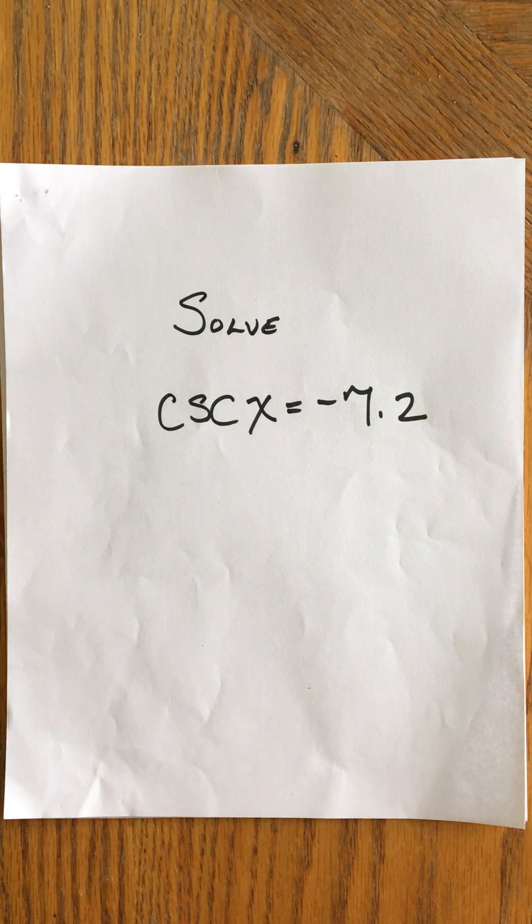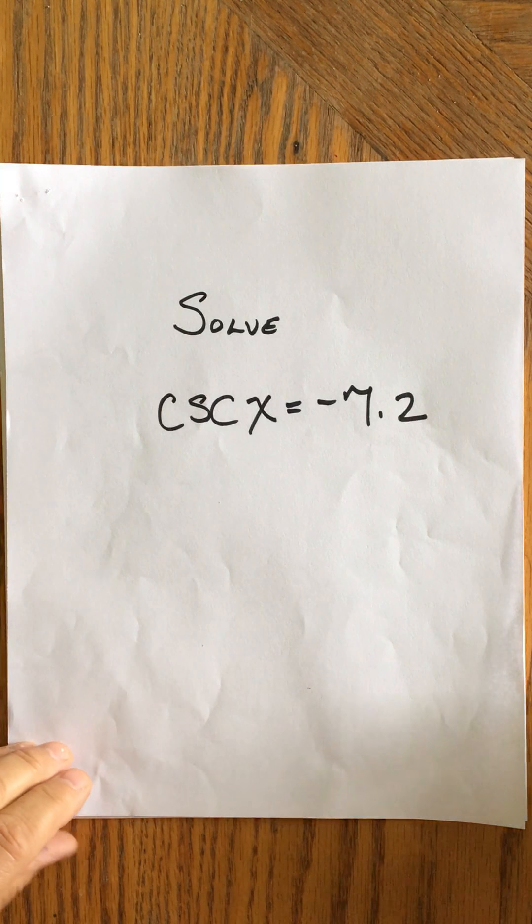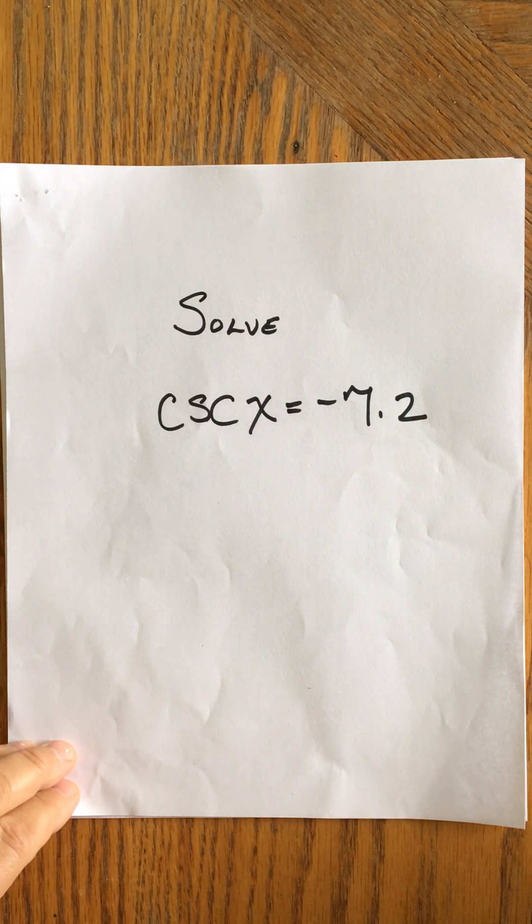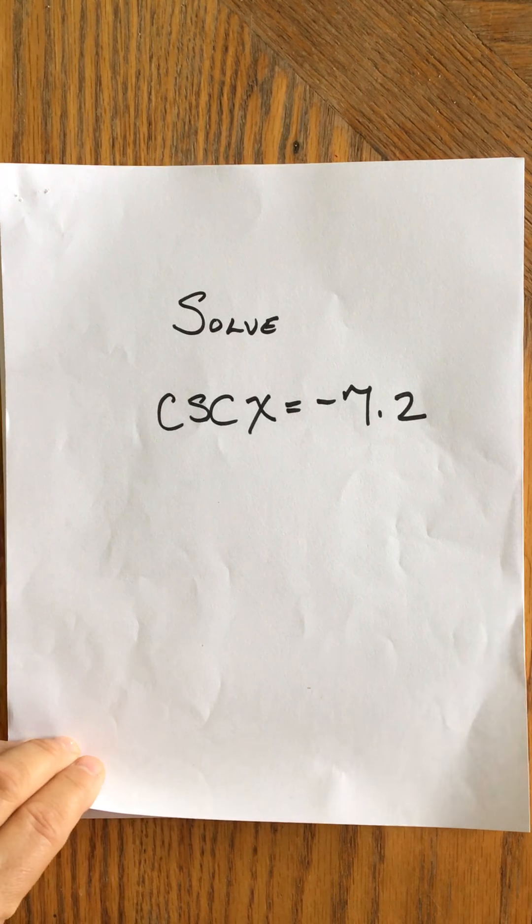Hello. In this video, we're going to look at how to solve cosecant of an angle x, where is that equal to negative 7.2? All right, let me go ahead and just rewrite it.